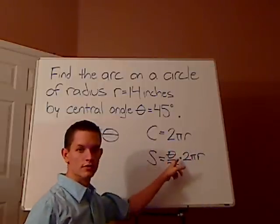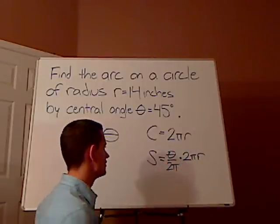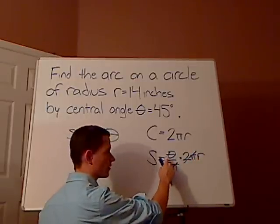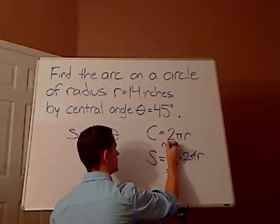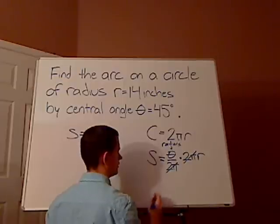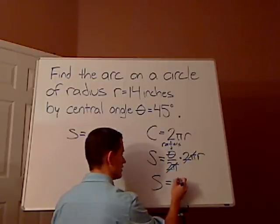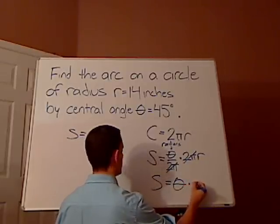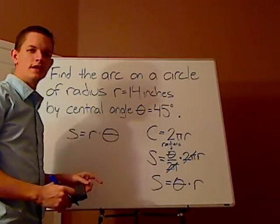Now, notice the 2 pi's, right? One here in the top part, one in the denominator. That cancels out. Well, if this is part and this is the total, that means that this has to be in radians. So s equals theta, which is your radians, times your radius. This is the same thing.